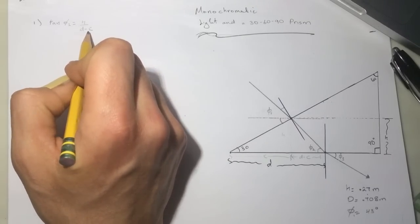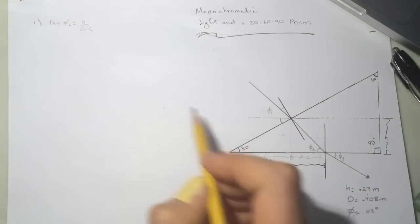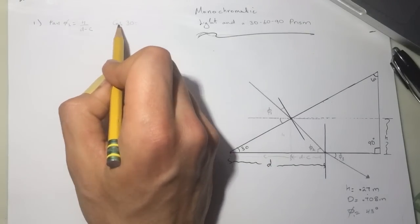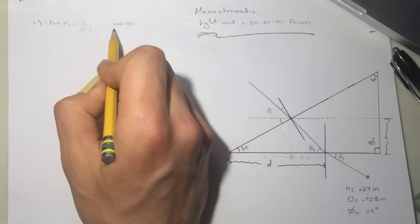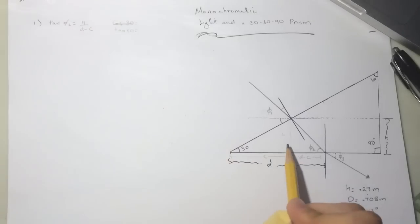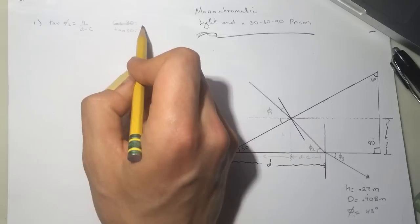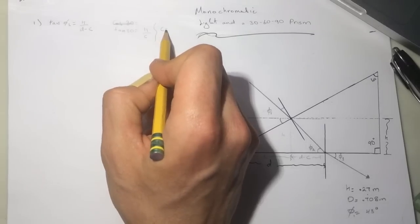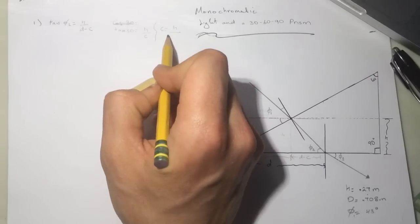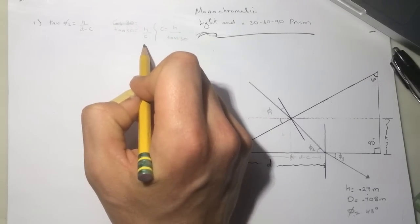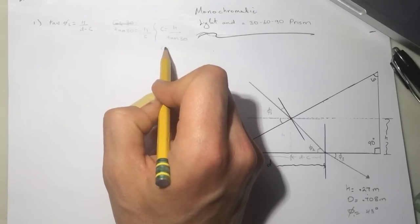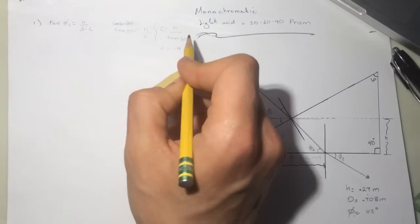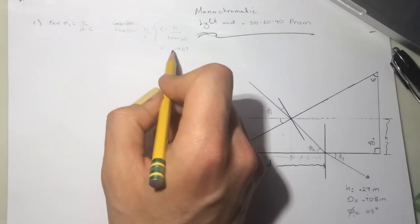We have D but we don't have C, so let's find C. It's not cosine — it's tangent. So tangent of 30 degrees equals H divided by C, where C is from here to here. That means C equals H divided by tan(30°). For C, I got 0.467.